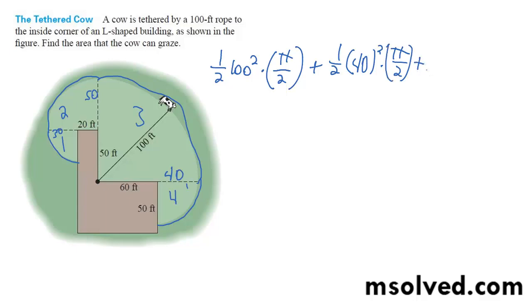So plus one half, 50 squared times pi over 2. Plus one half, 30 squared times pi over 2.